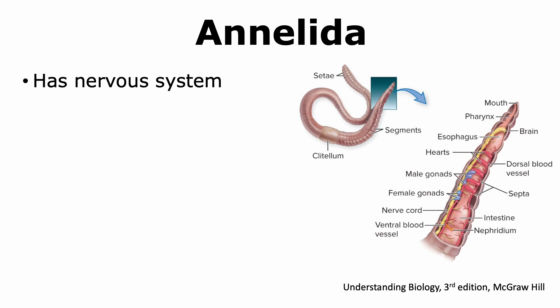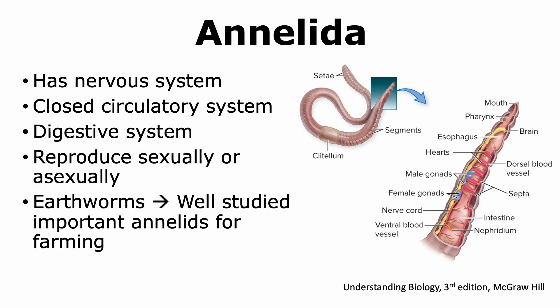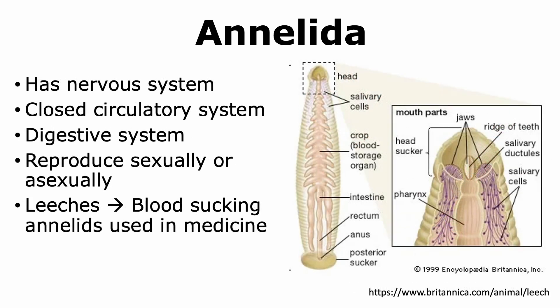All annelids have a nervous system, a closed circulatory system, a digestive system, and are able to reproduce sexually or asexually. Earthworms are well-studied annelids that play an important role in farming because they loosen soil and provide more nutritional value to it. Leeches are blood-sucking annelids, but they are also used in the medical field — the anticoagulant they produce to facilitate blood-sucking is used for therapeutic purposes in certain scenarios.